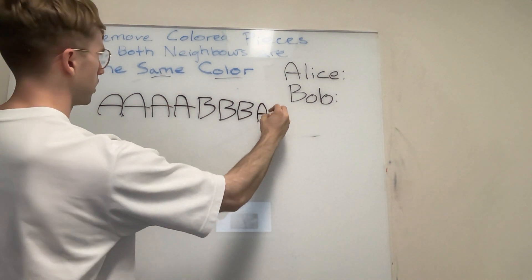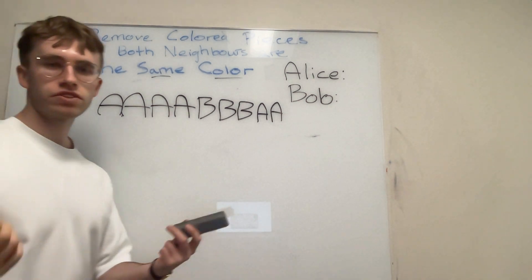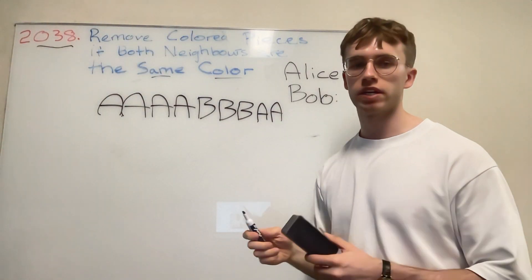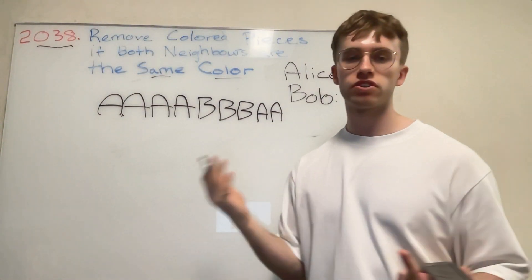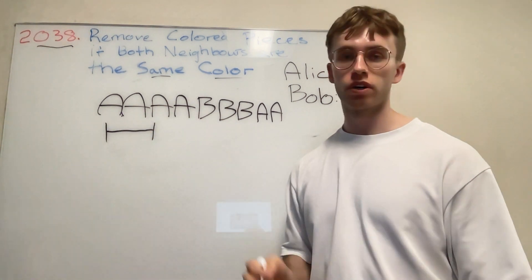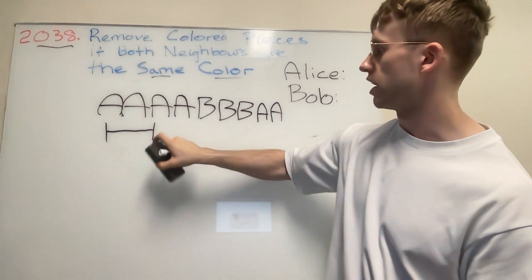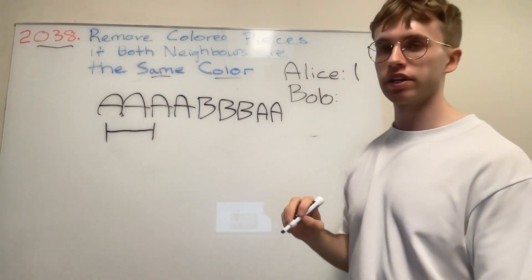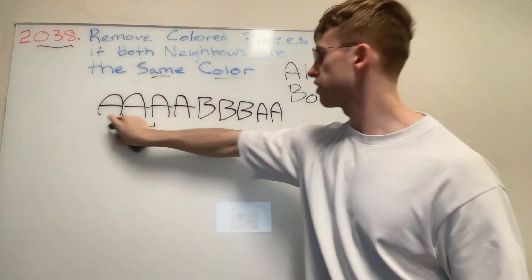And then let's say we have A again here, maybe two more A's. So essentially with this input, how you might imagine to play the game: you would see here, okay, Alice would get one point, so Alice is now at one.